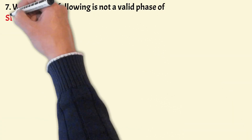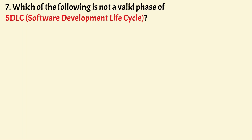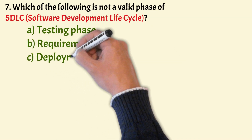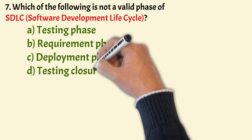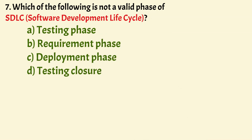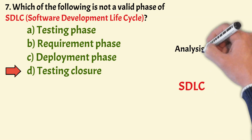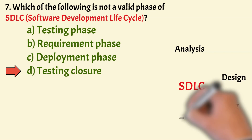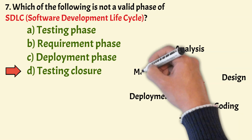Next: Which of the following is Not a Valid Phase of SDLC (Software Development Lifecycle)? Options: Testing Phase, Requirement Phase, Deployment Phase, and Testing Closer. The correct option is Option D, Testing Closer. Testing Closer is not a valid phase of SDLC. The SDLC includes: Planning and Requirement Analysis, Defining, Designing, Coding, Testing, Deployment, and Maintenance.